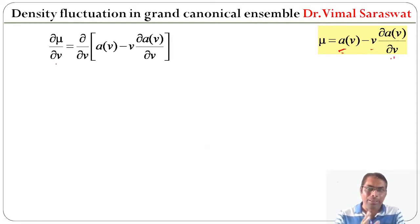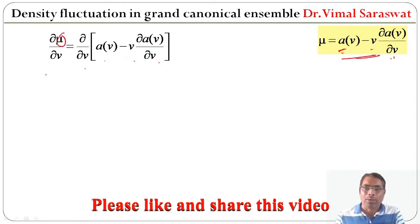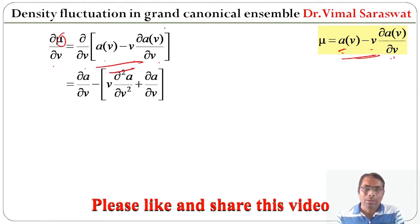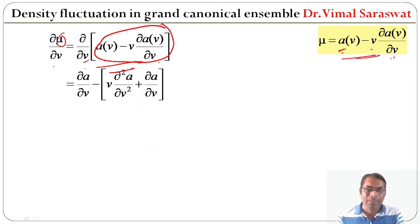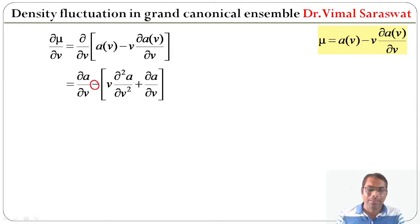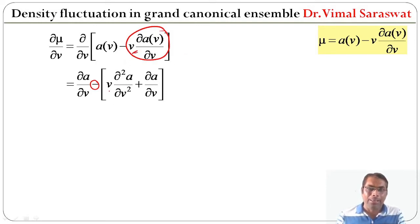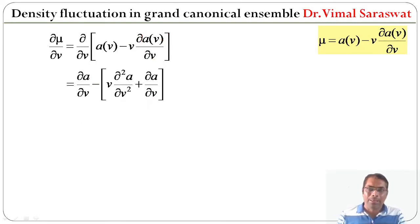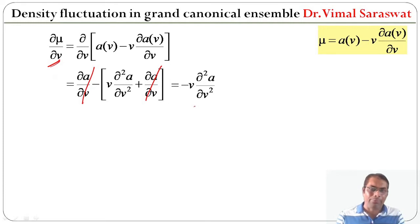Now ∂μ/∂v = ∂/∂v[a − v·(∂a/∂v)]. Differentiating using the product rule: the ∂a/∂v terms cancel, leaving ∂μ/∂v = −v·(∂²a/∂v²).